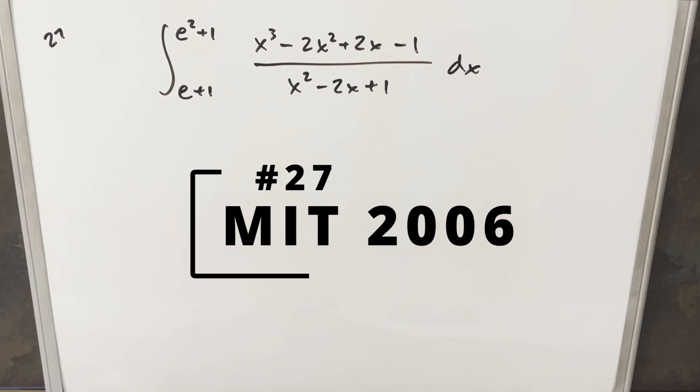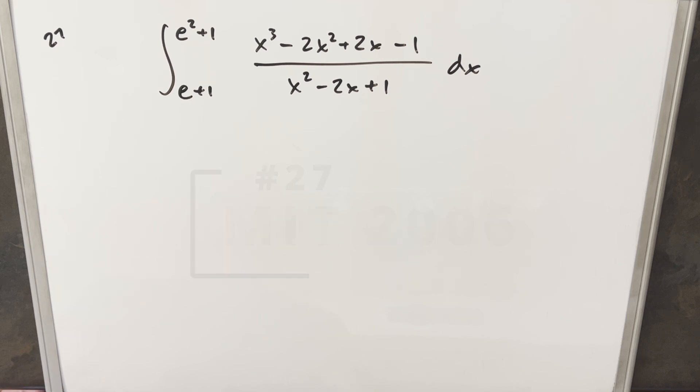Okay, we have here today another integral from the MIT integration B 2006. This is problem 27. We have the integral from e plus 1 to e squared plus 1 of x cubed minus 2x squared plus 2x minus 1 over x squared minus 2x plus 1 dx.